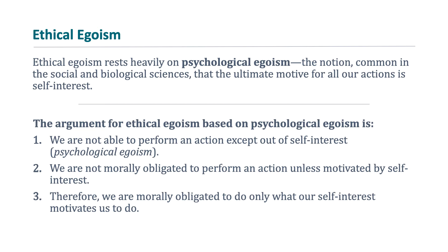Ethical egoism relies heavily on what's called psychological egoism — the notion that the ultimate motive for all people and all actions is self-interest. The argument for ethical egoism based on psychological egoism begins with the first premise: we are not able to perform actions except out of self-interest. A key question is whether that is actually true — can you think of any action you perform where you're not acting out of self-interest?